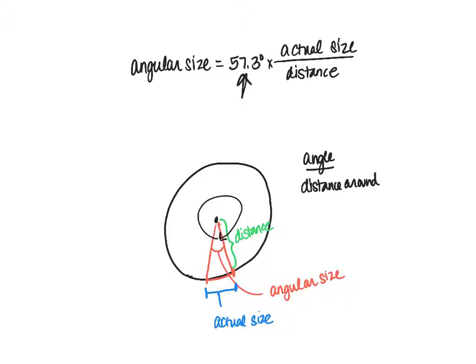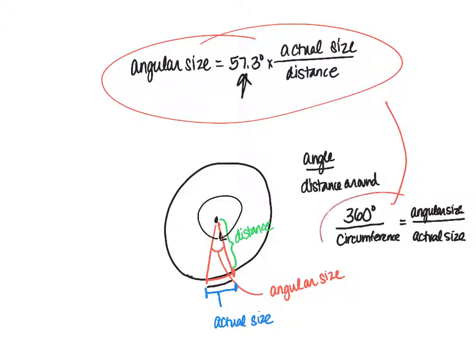If we have a whole circle, if we go the whole way around that's 360 degrees and the distance around is the circumference. But if we just think about this little piece of the pie for the angular size, the angle is the angular size and the distance here would be the actual size. This relationship we see up here is going to come from here with just some rearranging.